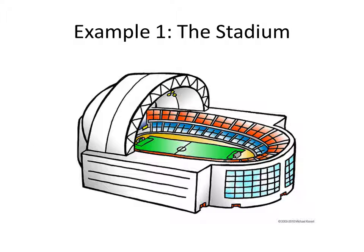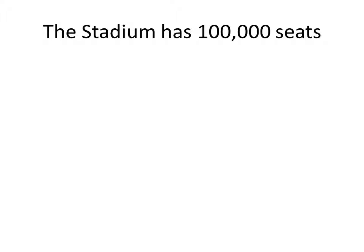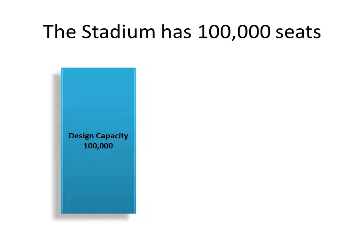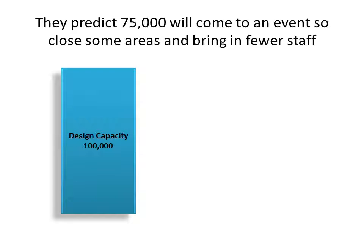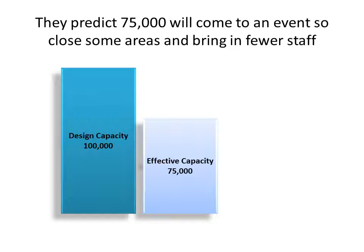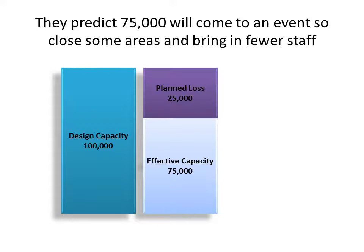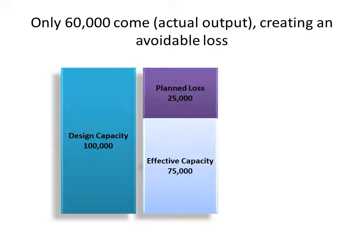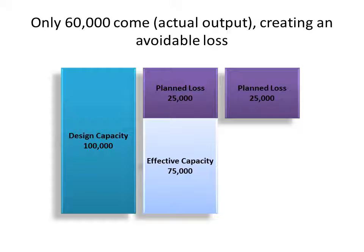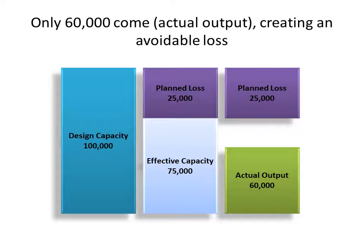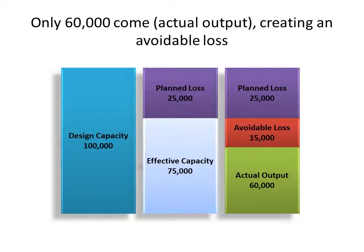So what does that look like? Let's take an example of a football stadium. If you have a stadium with 100,000 seats, you've got a design capacity of 100,000. If you predict that 75,000 people will come to an event, so you close some areas and maybe bring in fewer staff, you have an effective capacity of 75,000, and that 25,000 is a planned loss. In the event, if only 60,000 people come, you've still got a planned loss of 25,000, an actual output of 60,000, and there's your avoidable loss of 15,000.